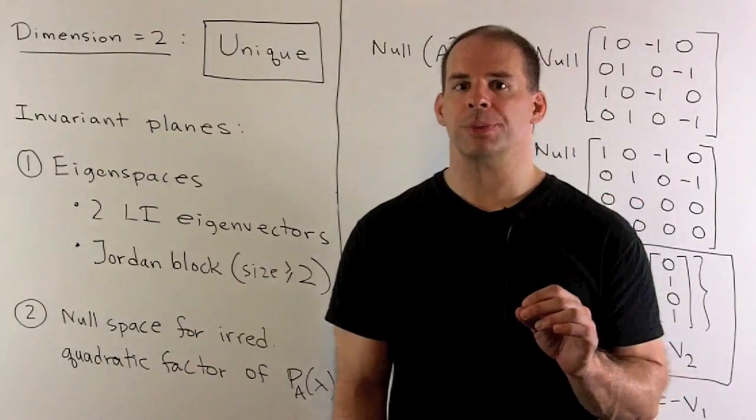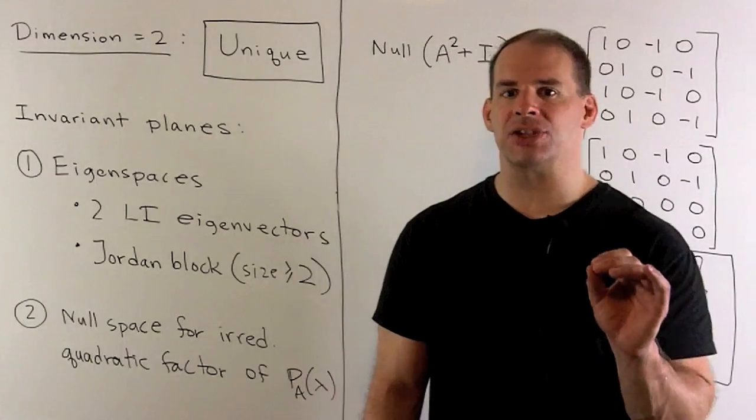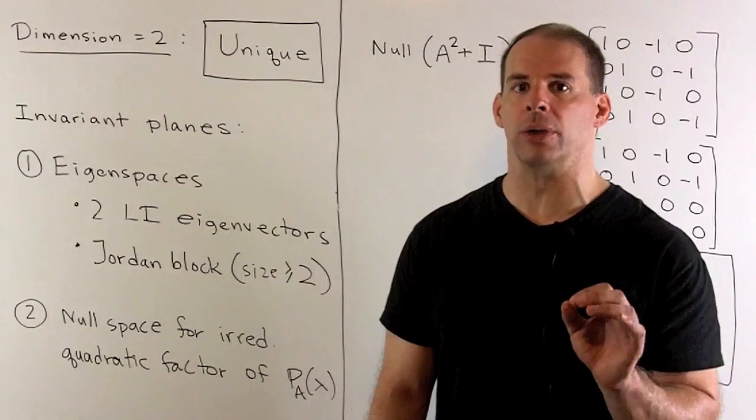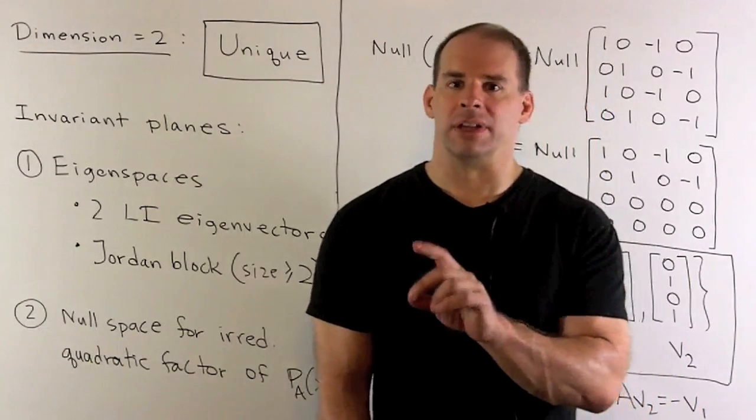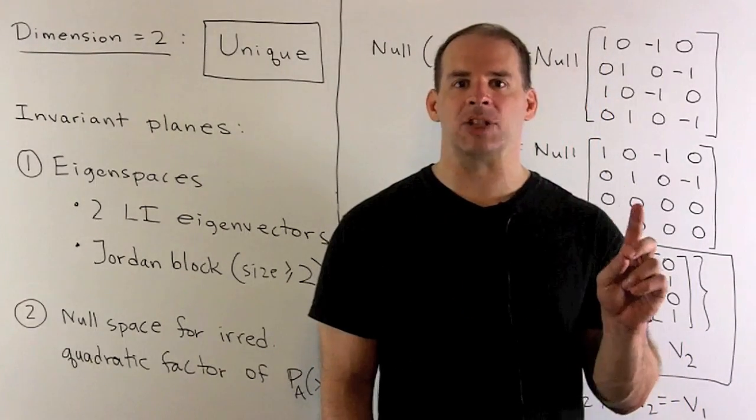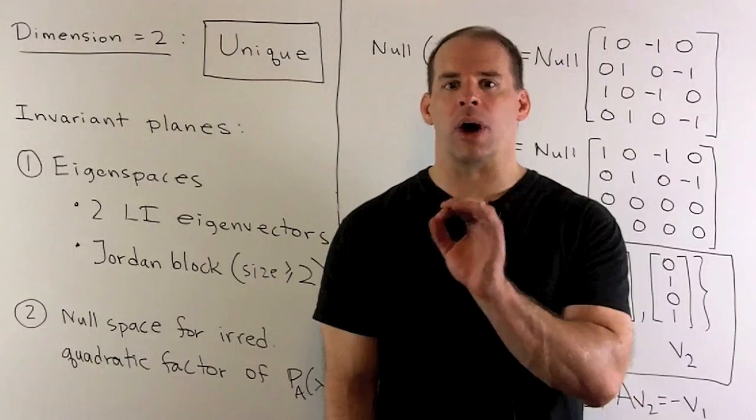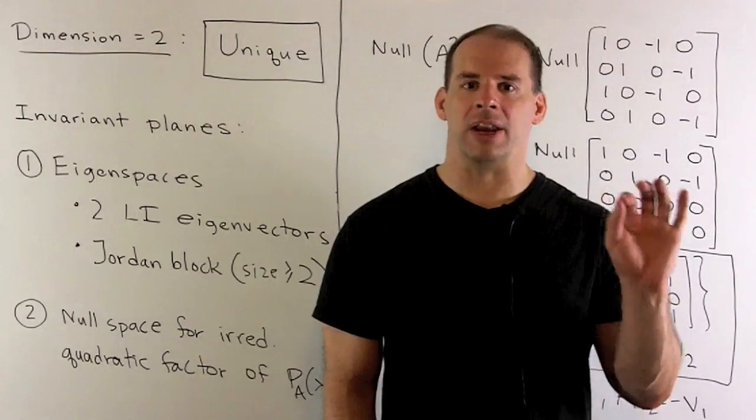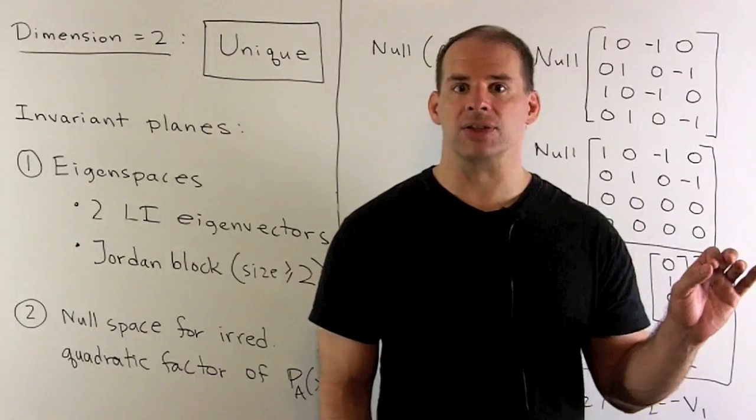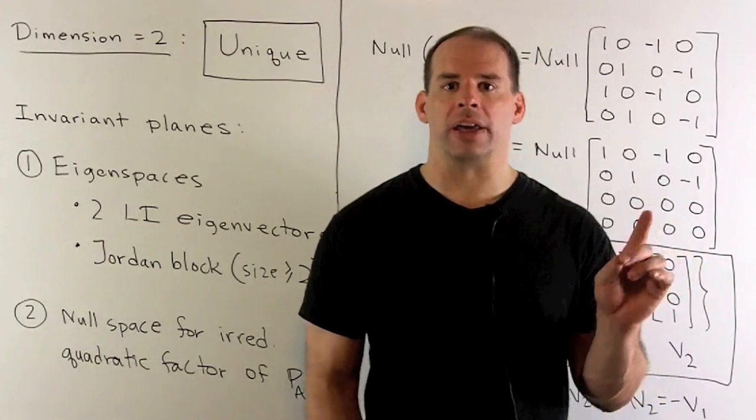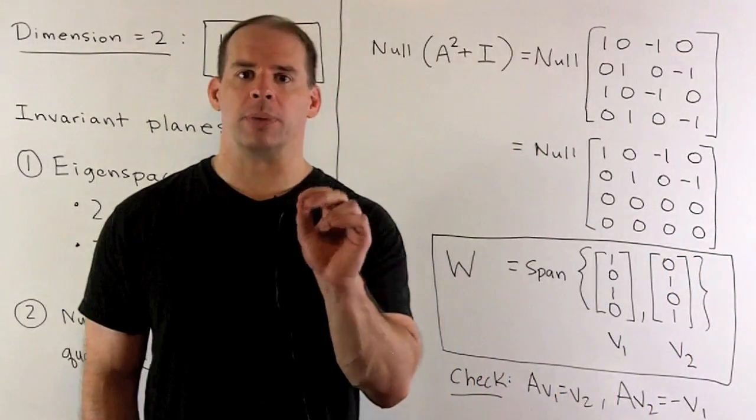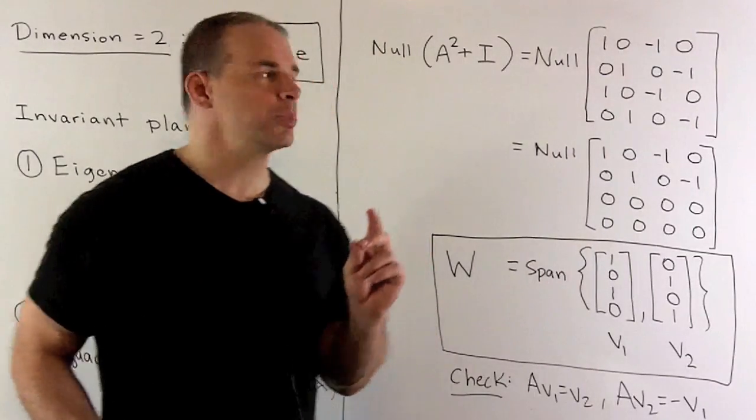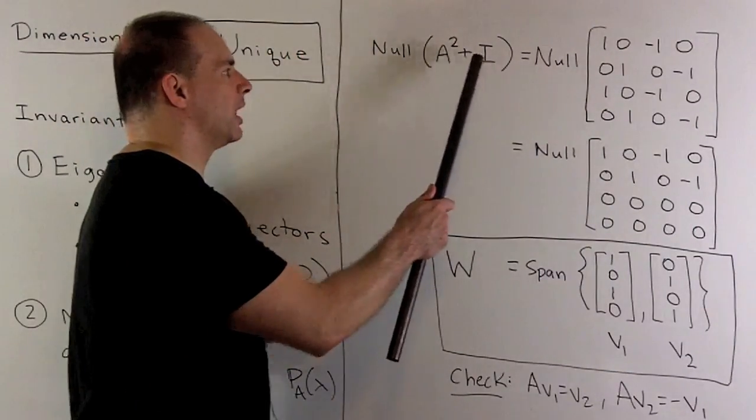Another approach, we could look at null spaces corresponding to irreducible quadratic factors of the characteristic polynomial. The linear factors correspond to eigenspaces. The irreducible quadratic factors are going to correspond to invariant planes that include non-variant lines. In our case, the characteristic polynomial is lambda squared plus one, quantity squared. So, I would consider the null space for A² plus I.